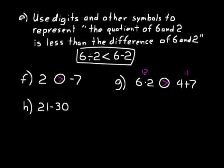Now let's do a subtraction problem where the answer will be a negative number. For 21 minus 30: if you move 21 to the right on a number line and then back to the left 30, you go past the origin and keep going — so it's negative. Subtract bigger minus smaller: 30 − 21 = 9, but put a negative sign in front of it. So 21 − 30 = negative 9. And 30 − 21 = positive 9.